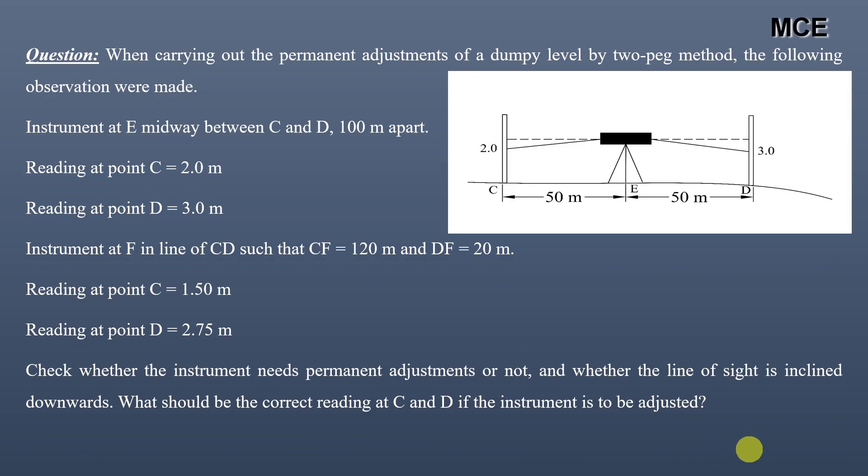Collimation error in leveling refers to the misalignment or deviation of the line of sight of the leveling instrument from the true horizontal or vertical. This error can occur due to various factors such as the imperfect adjustment of the instrument or environmental conditions like temperature change. Collimation error can lead to inaccurate readings and must be minimized or corrected for precise leveling measurements.